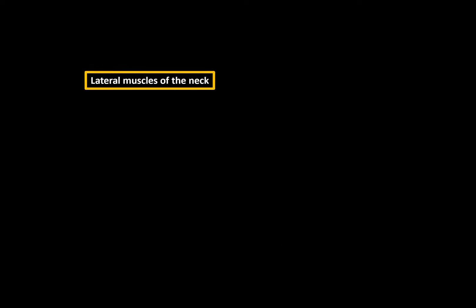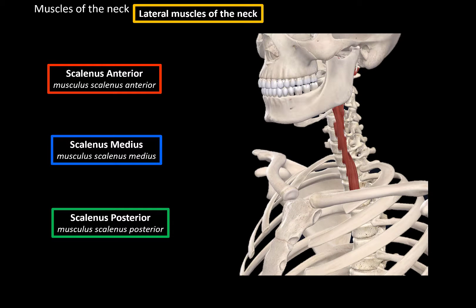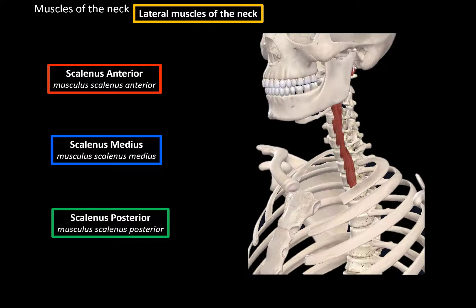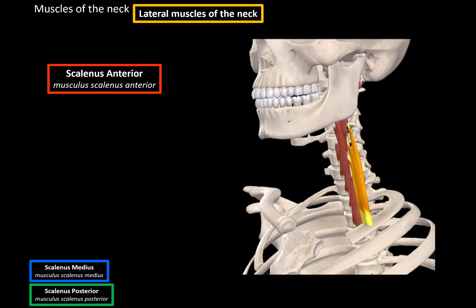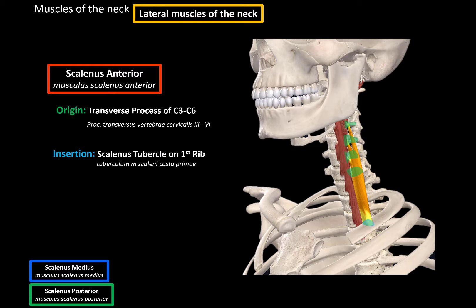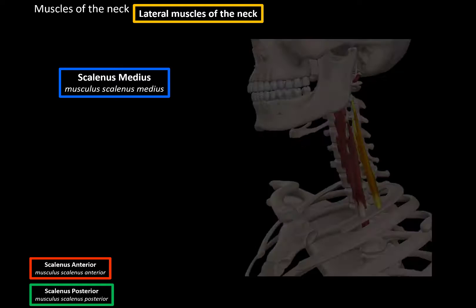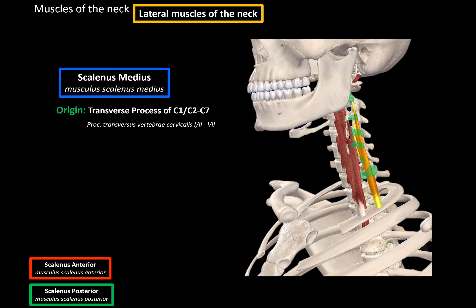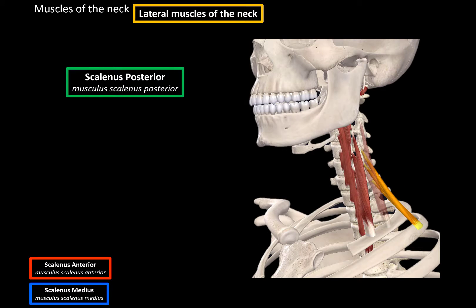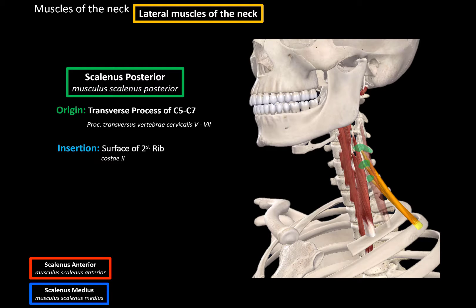Now let's talk about the lateral muscles of the neck — these are mostly the scalenus muscles: scalenus anterior, medius, and posterior. They primarily originate from the first and second rib. Let's remove the clavicle to see them better. The scalenus anterior originates from the transverse processes of C3 to C6 and inserts at the scalene tubercle on the first rib. The scalenus medius is just posterior to the scalenus anterior and originates from C1 to C7 (or C2 to C7, depending on the source), inserting on the surface of the first rib behind the scalenus anterior. The scalenus posterior originates from the transverse processes of C5 to C6 and inserts at the surface of the second rib.